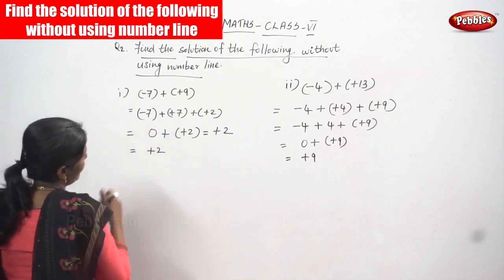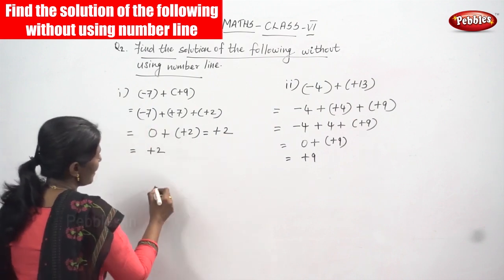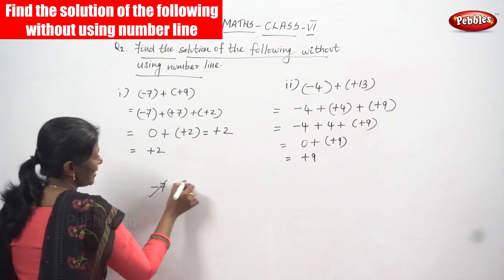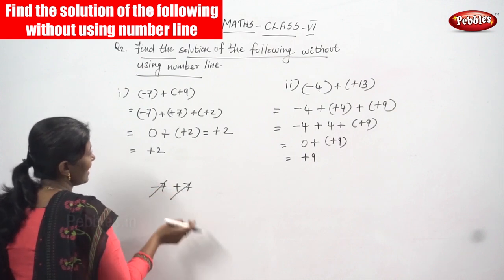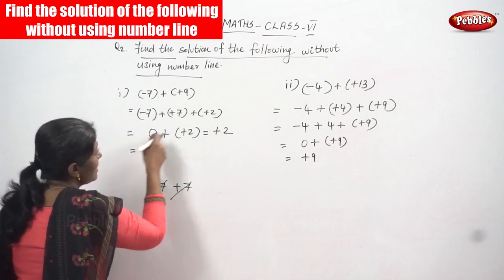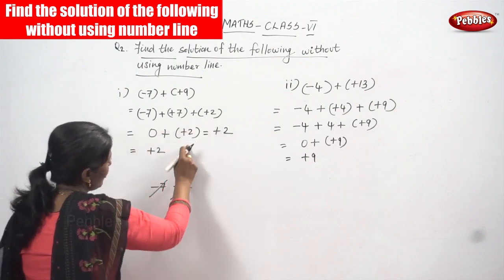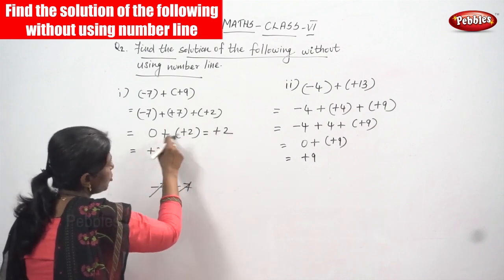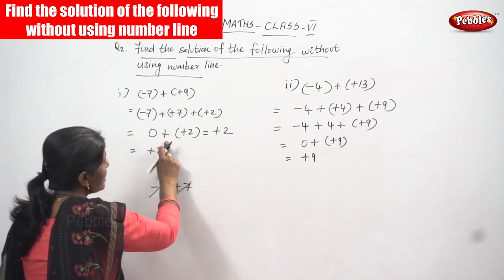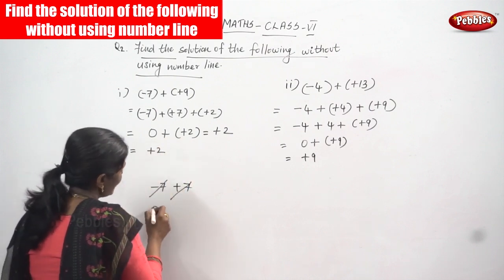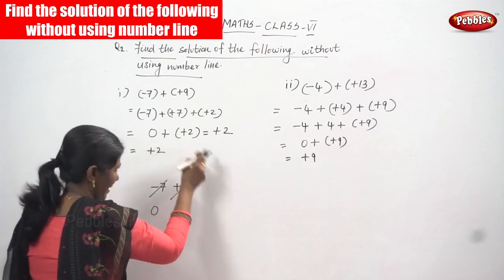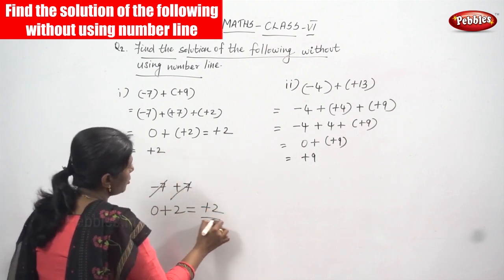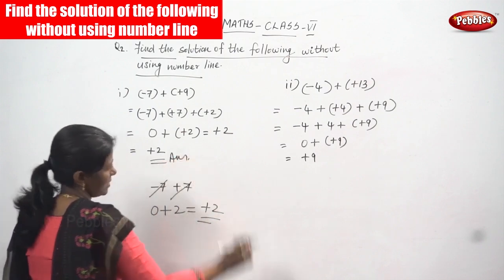So minus seven plus seven — if you add these together, minus seven plus seven: minus and plus will cancel and you get zero. Then zero plus, and after that you write plus two. Zero plus plus two — plus into plus gives you plus — so zero plus two equals plus two. So plus two is the right answer for this question.